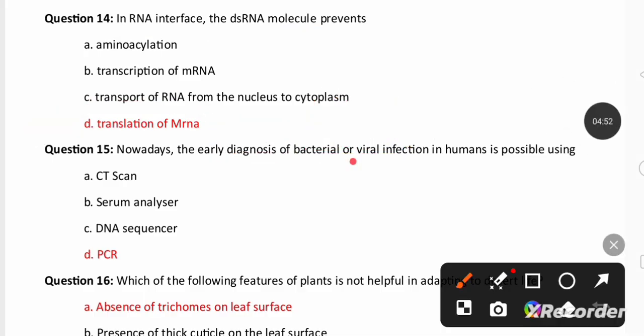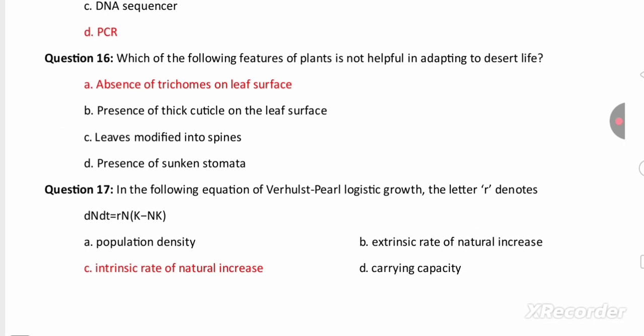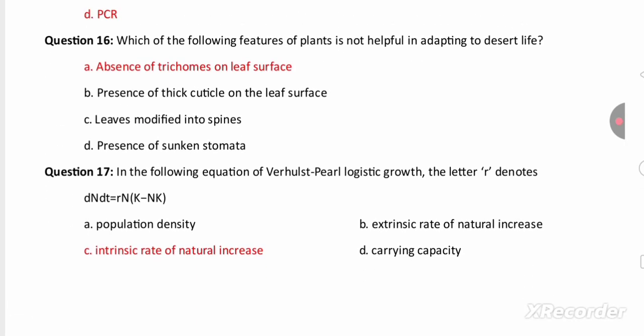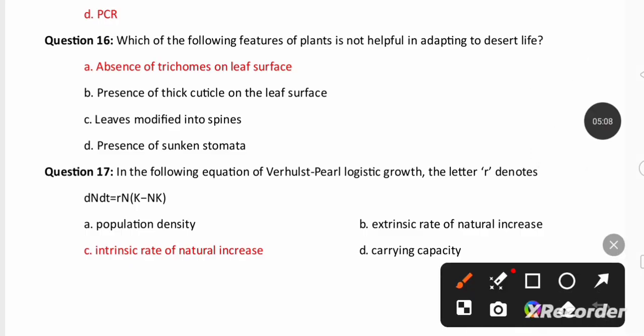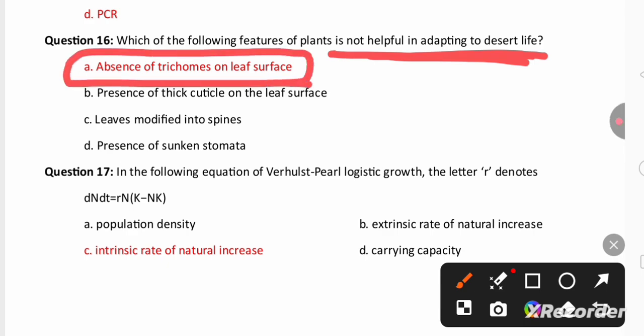Next: nowadays the early diagnosis of bacterial or viral infection in human is possible because of the diagnostic technique called PCR. In the next question we can find which of the following feature of the plant is not helpful in adapting to desert life. Not helpful in adopting to desert life is absence of trichomes on leaf surface, whereas thick cuticle, spines, sunken stomata, they all are the adaptations in xeric plants.